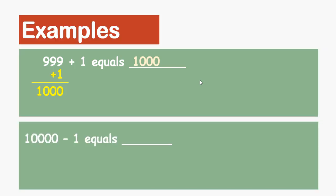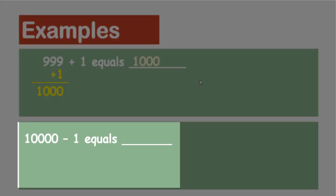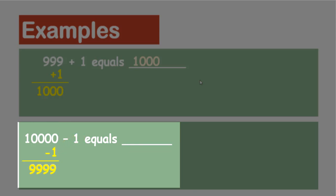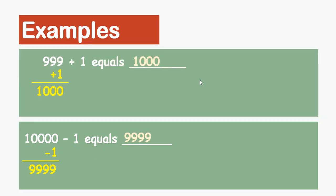Another problem: 10,000 minus 1 equals dash. Here, minus 1 represents predecessor. When we subtract one from 10,000, we get 9999, which is the predecessor of 10,000.